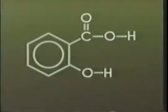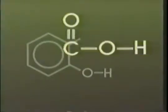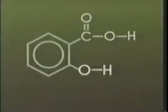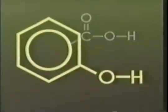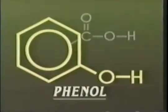Salicylic acid is a compound which consists of a 1,2-di-substituted benzene ring. The functional groups on the benzene ring are a carboxylic acid and a hydroxyl group. The benzene ring together with the hydroxyl group form what is called a phenol.